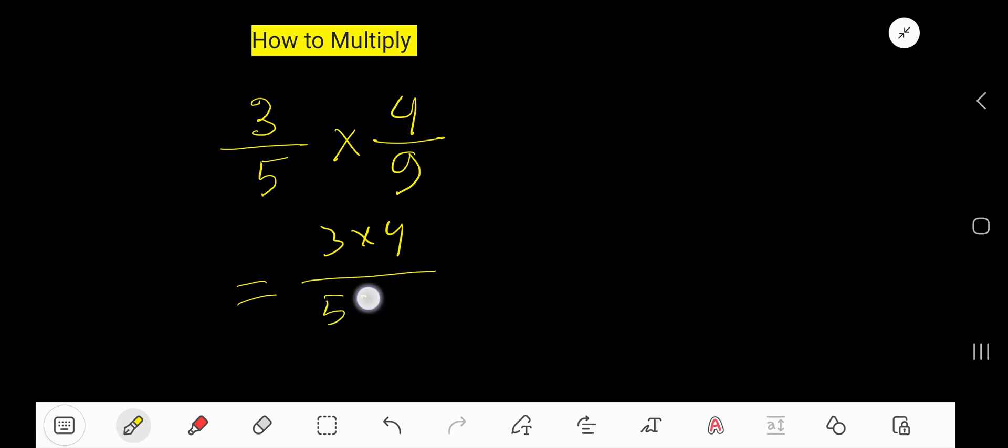Now you have found a new fraction where numerator is this and denominator is this. Multiply 4 times 3 = 12 and 5 times 9 = 45.